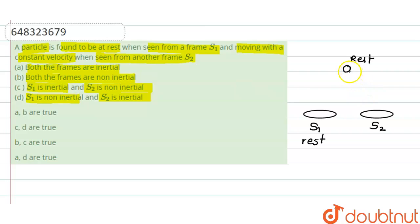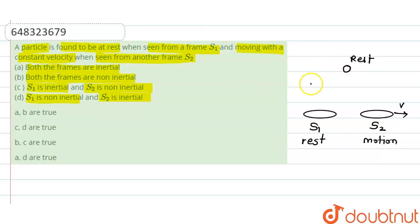From the second frame S2, the particle appears to be moving with a constant velocity, but actually the particle is at rest. To satisfy this condition, we conclude that S2 is moving with some velocity — it is in motion. In both cases the acceleration is zero, and when acceleration is zero the frame is inertial. So both frames are inertial, meaning option A is correct.